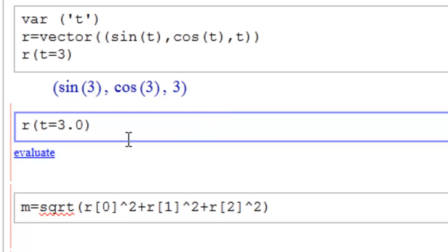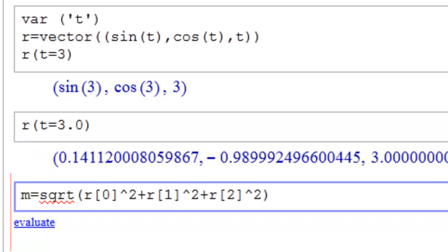If we want a numeric answer, we would put r of t equal to 3.0, and it knows that we're after a numeric answer. And we will get one with, I think, 10 decimal places.